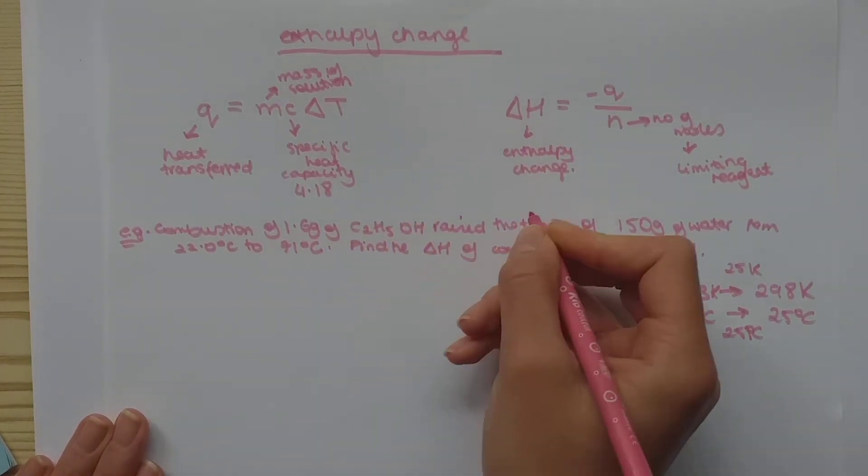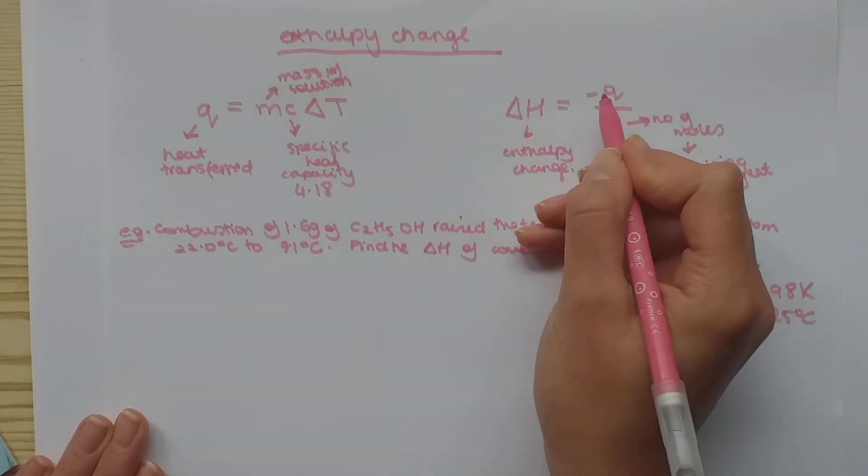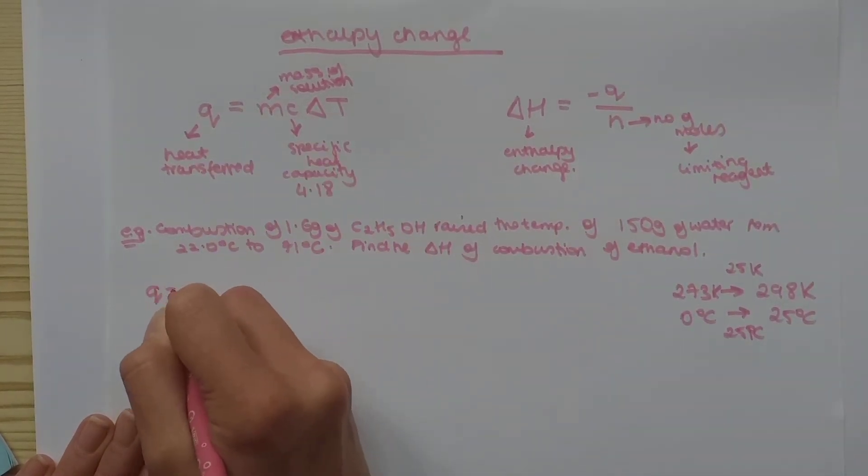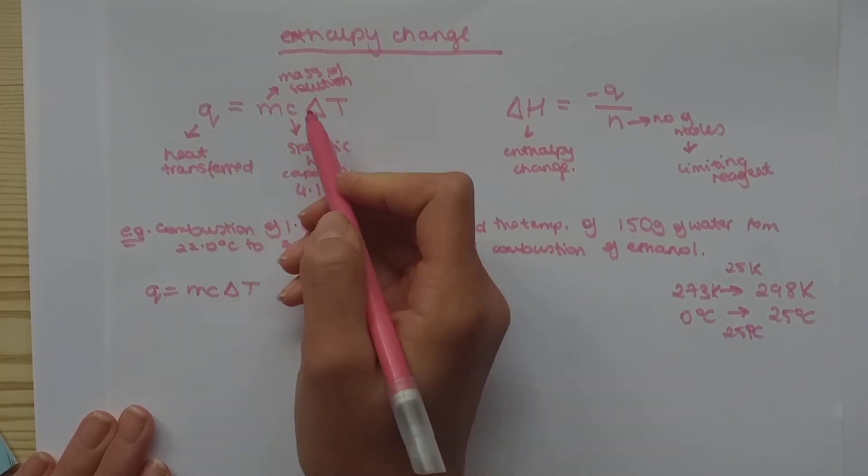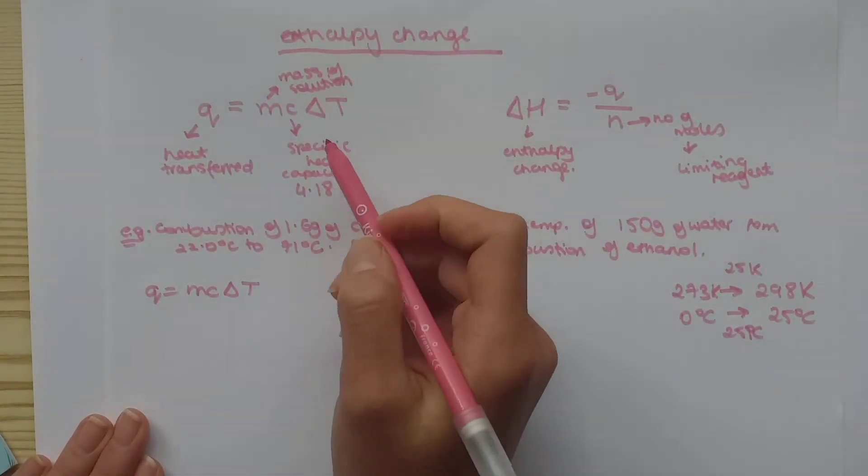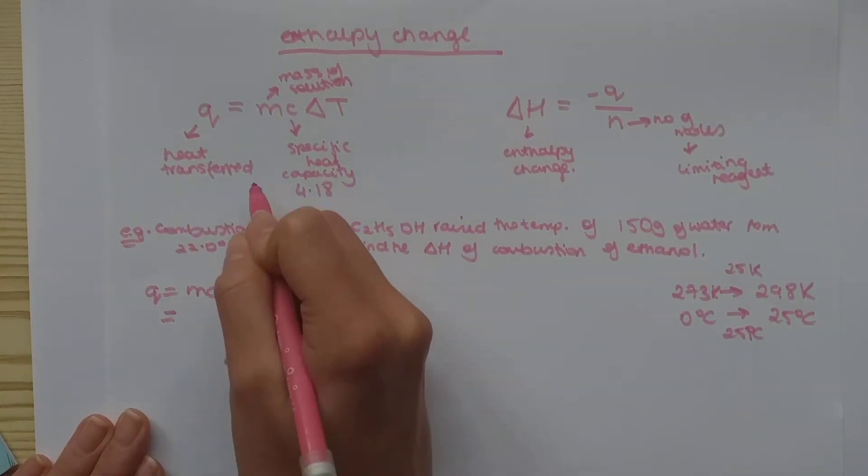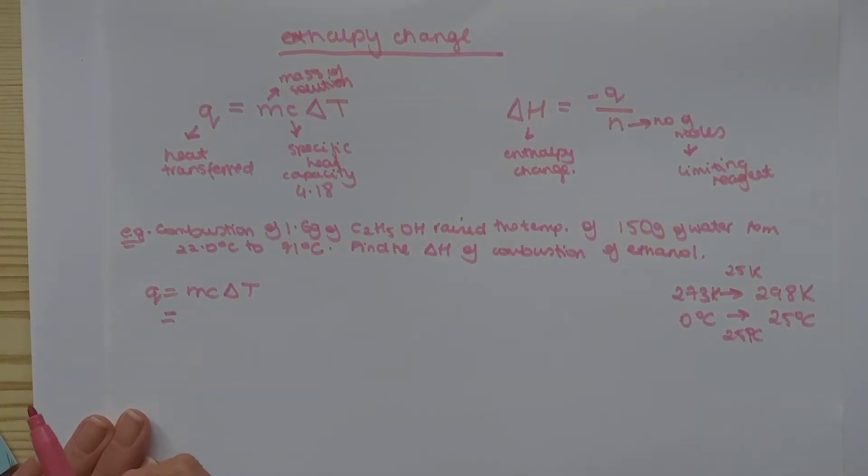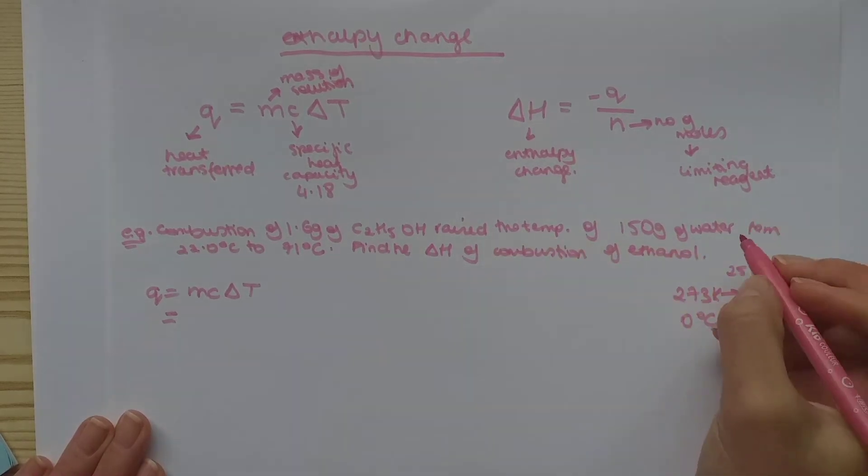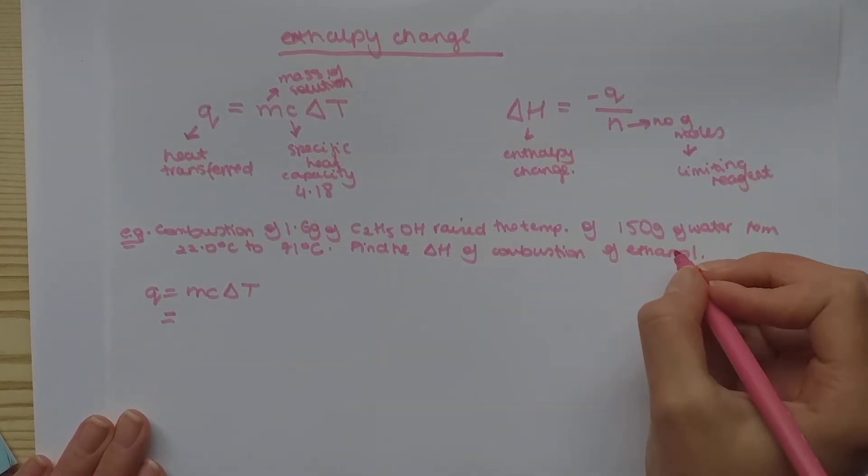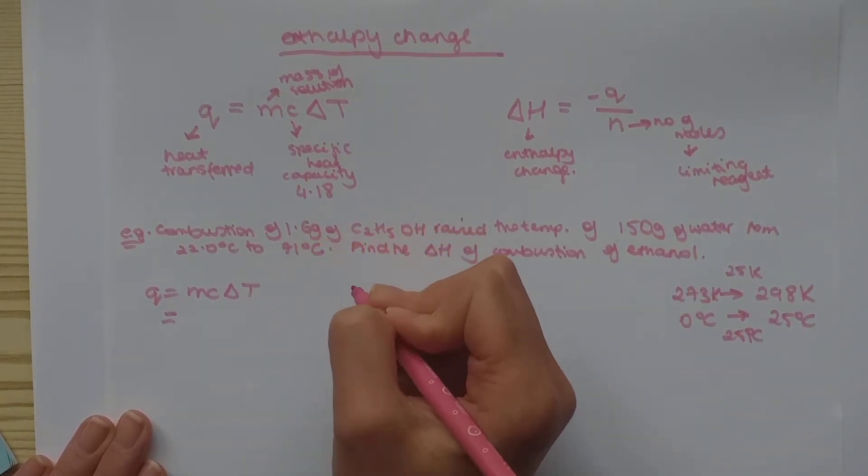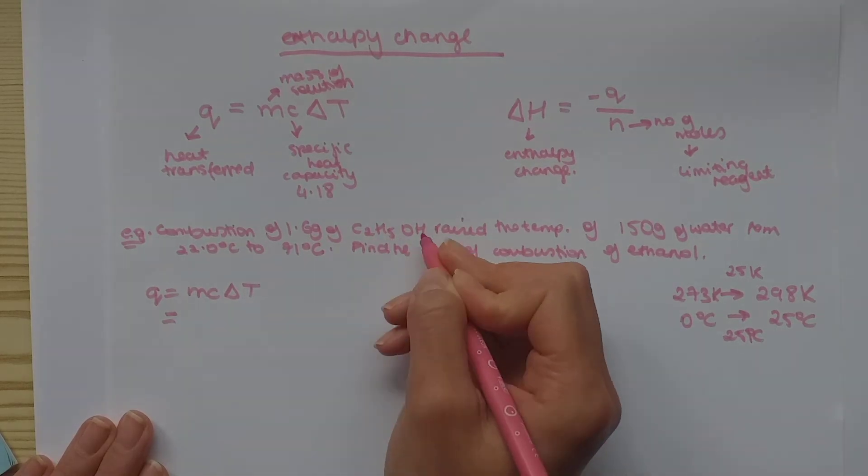So, you're asked to find change in H. But do we have our heat transferred, minus Q? No. So, we have to find Q first, which is M, C, change in T. You don't get these on your data booklet, so you have to know them off by heart. So, mass is the mass of solution. The mass we use is the 150 grams of water plus 1.6 grams of C2H5OH.